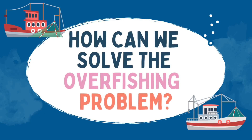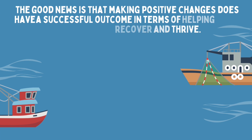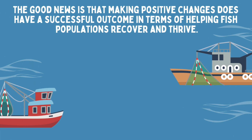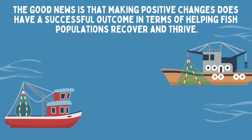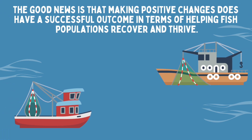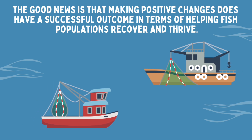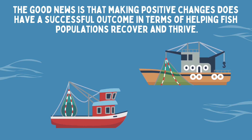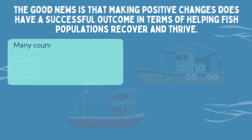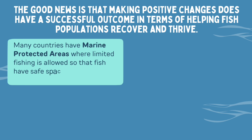How can we solve the overfishing problem? The good news is that making positive changes does have a successful outcome in terms of helping fish populations recover and thrive. Many countries have marine protected areas where limited fishing is allowed so that fish have safe spaces to grow and reproduce.